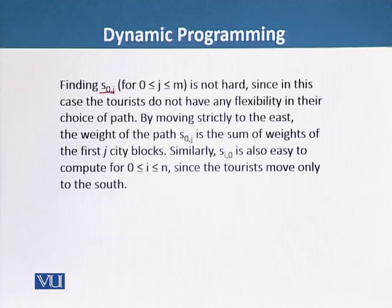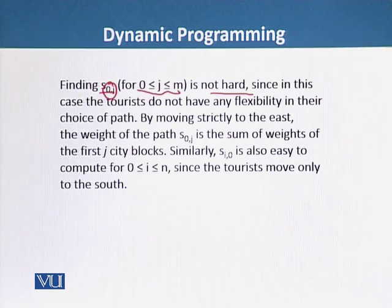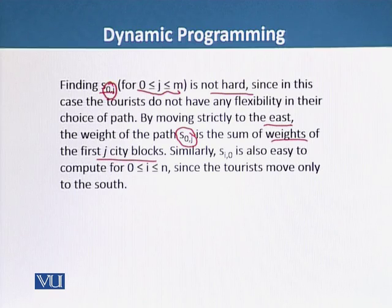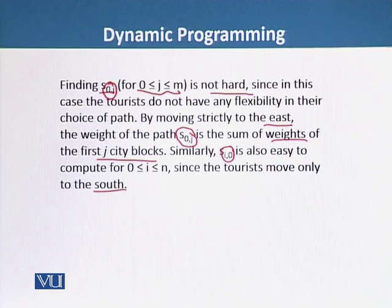For finding S(0,j) where 0 ≤ j ≤ m, it is not very difficult, since the tourist has no flexibility and must move only in the east direction. The weight of the path S(0,j) is the sum of the weights of the first j city blocks. Similarly, for S(i,0) where 0 ≤ i ≤ n, the tourist has no option but to move only in the south direction.